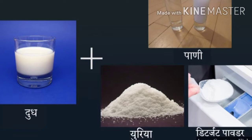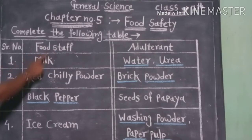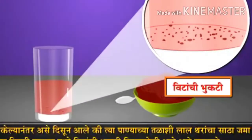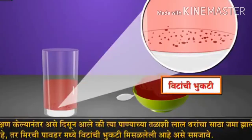Number 2. Foodstuff: red chili powder. Adulterant: brick powder. In Marathi - Annapadartha: lal tikhat. Vhesadichepadartha: vitanchi bhukti.